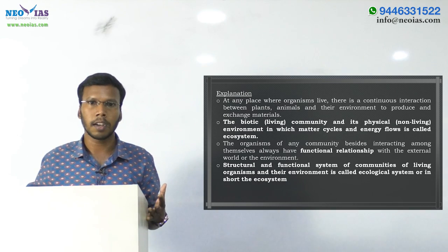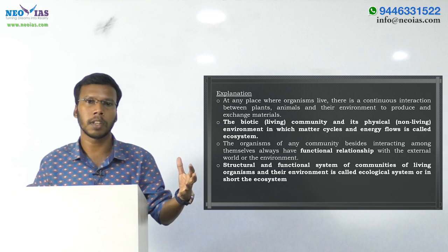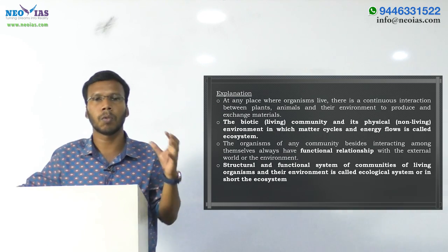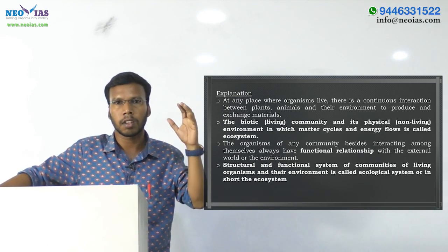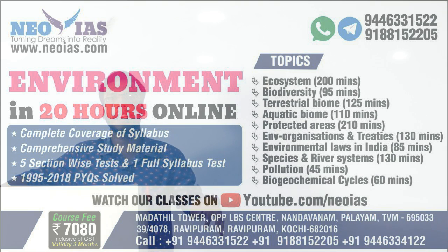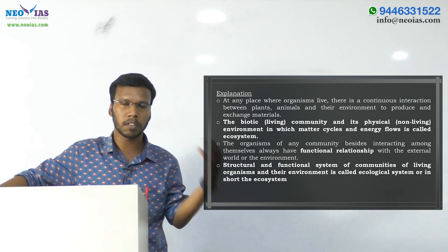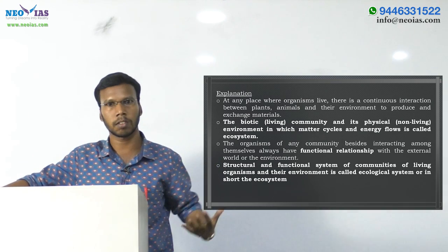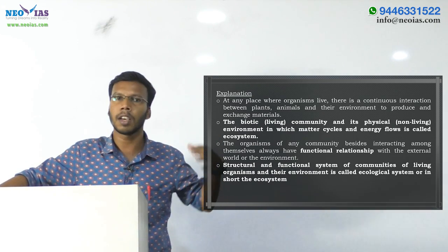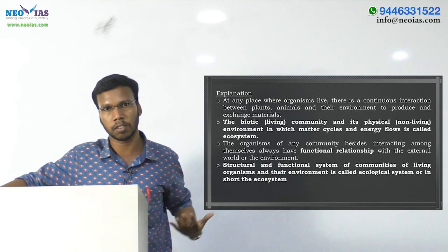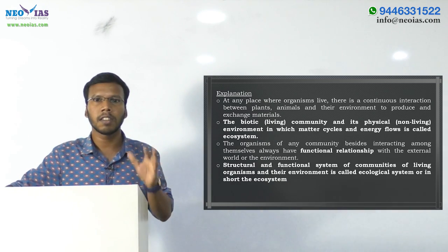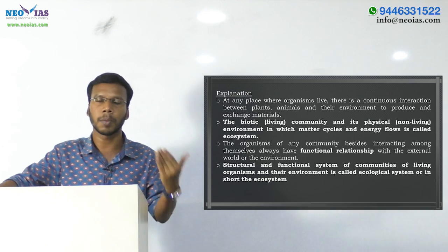We can say that the living community in a region will have its own function, and the entire region itself is having a function. Since ecosystem is a community of living organisms and their environment, that entire region has a function. We can say that ecosystem itself is having a functional role in nature because every component of the ecosystem has its own functions. So, we can say the ecosystem is considered as a functional unit of nature. Since we are talking about functions, we have another definition: the structural and functional system of communities of living organisms and their environment is called an ecosystem.